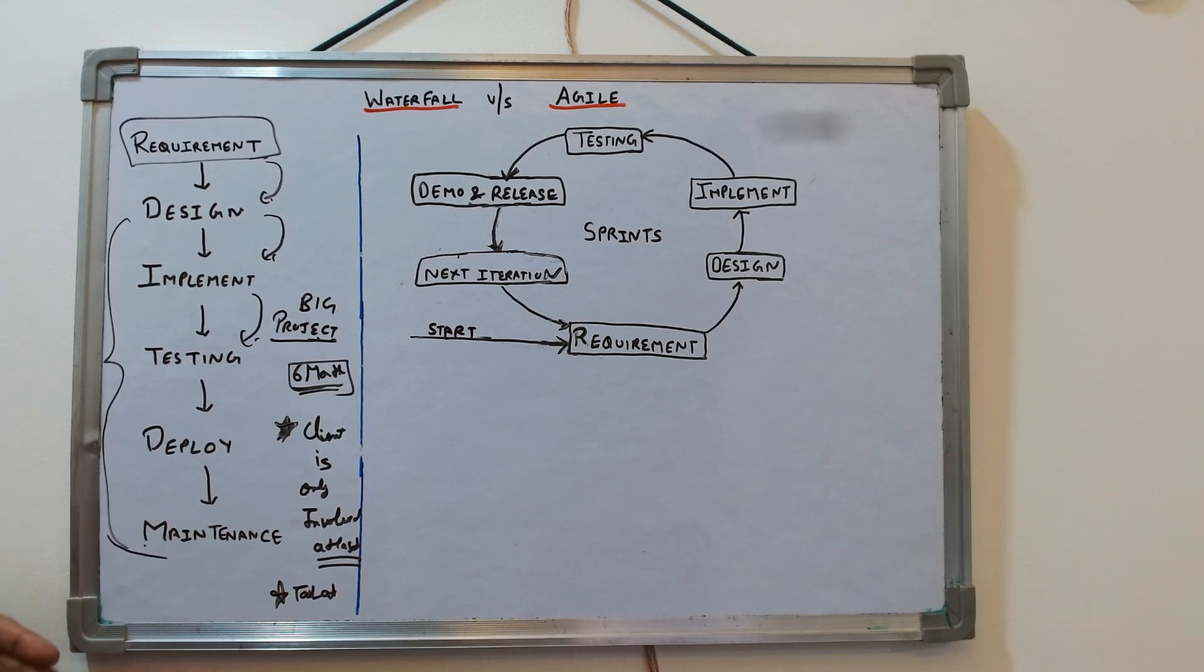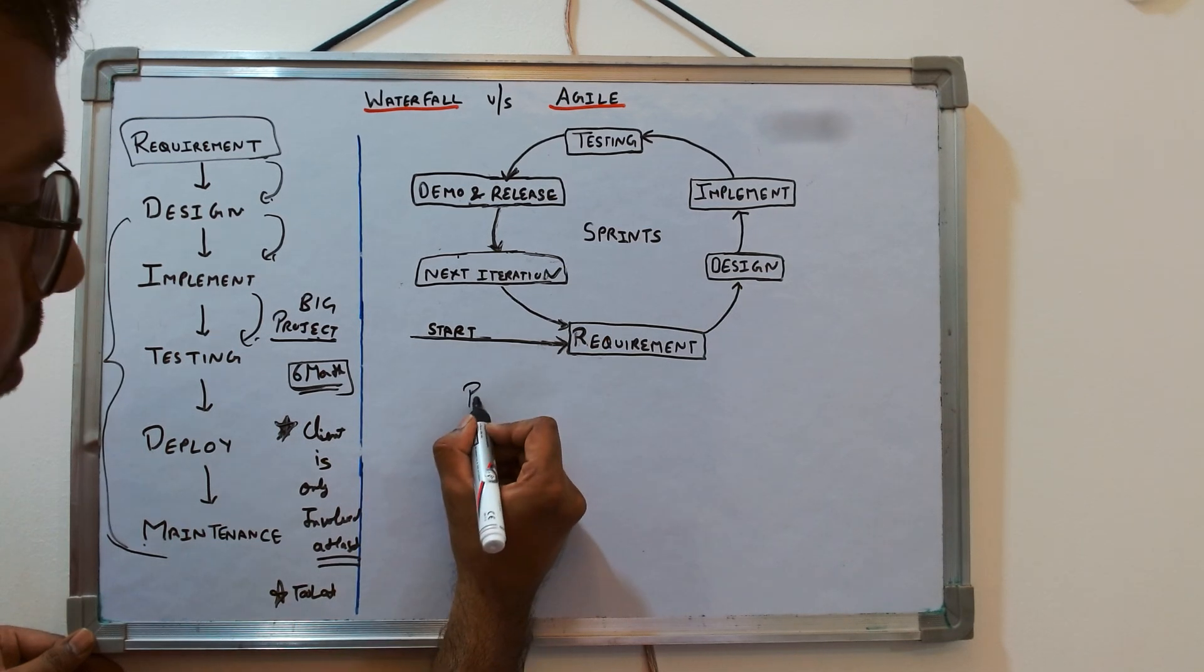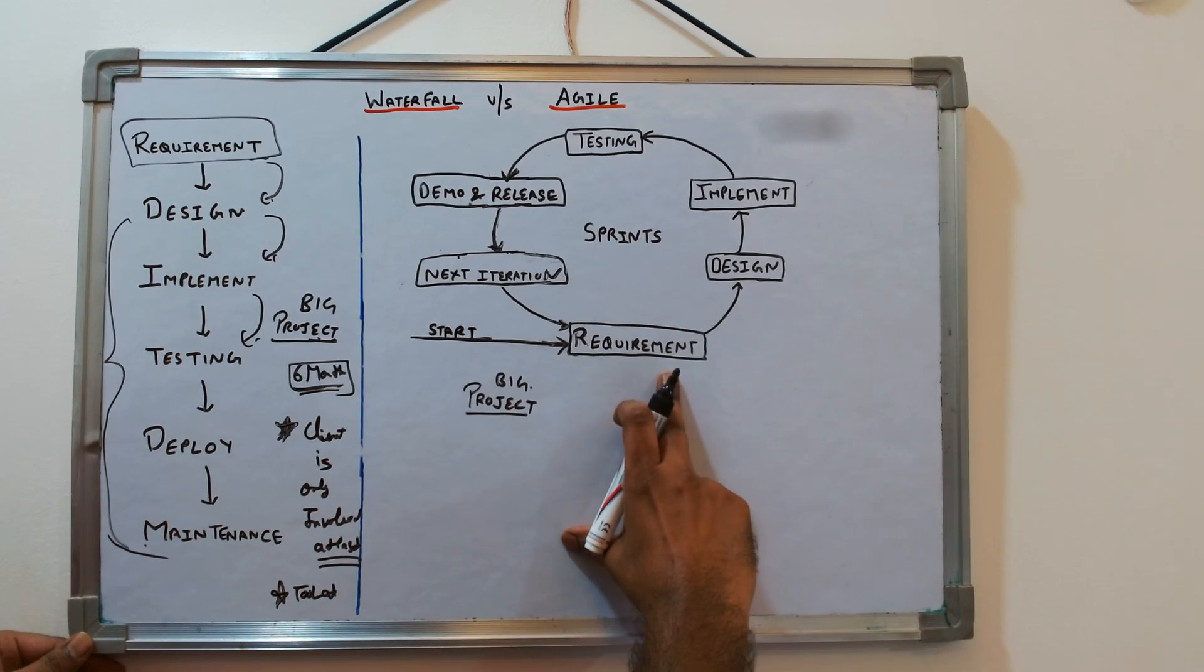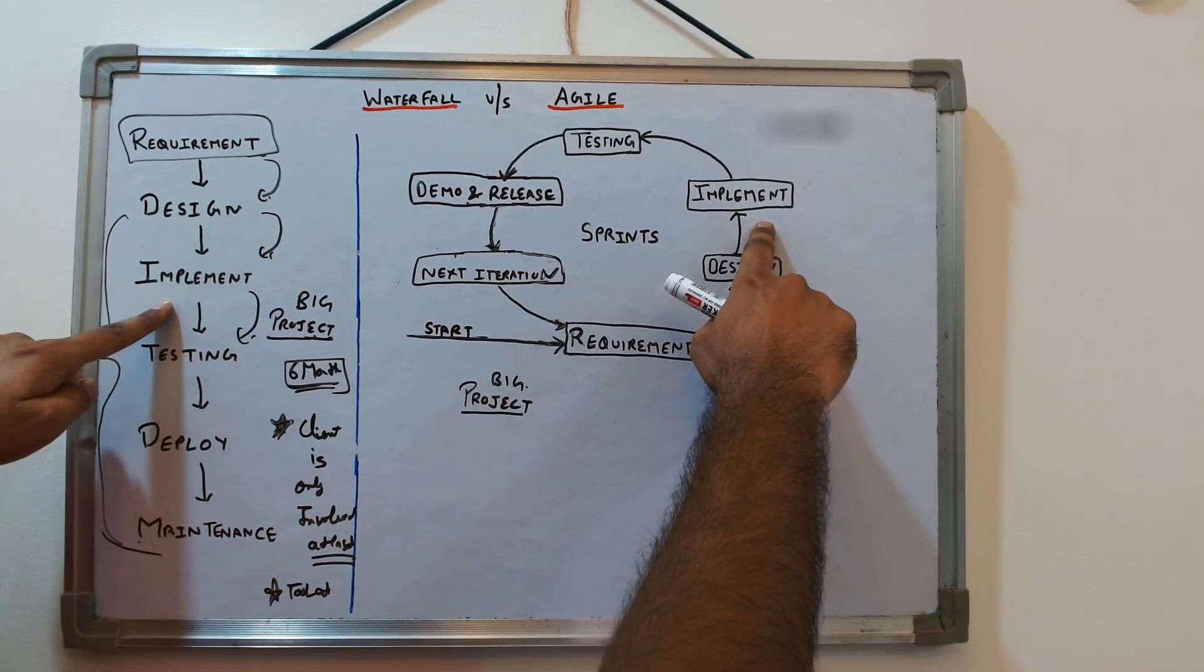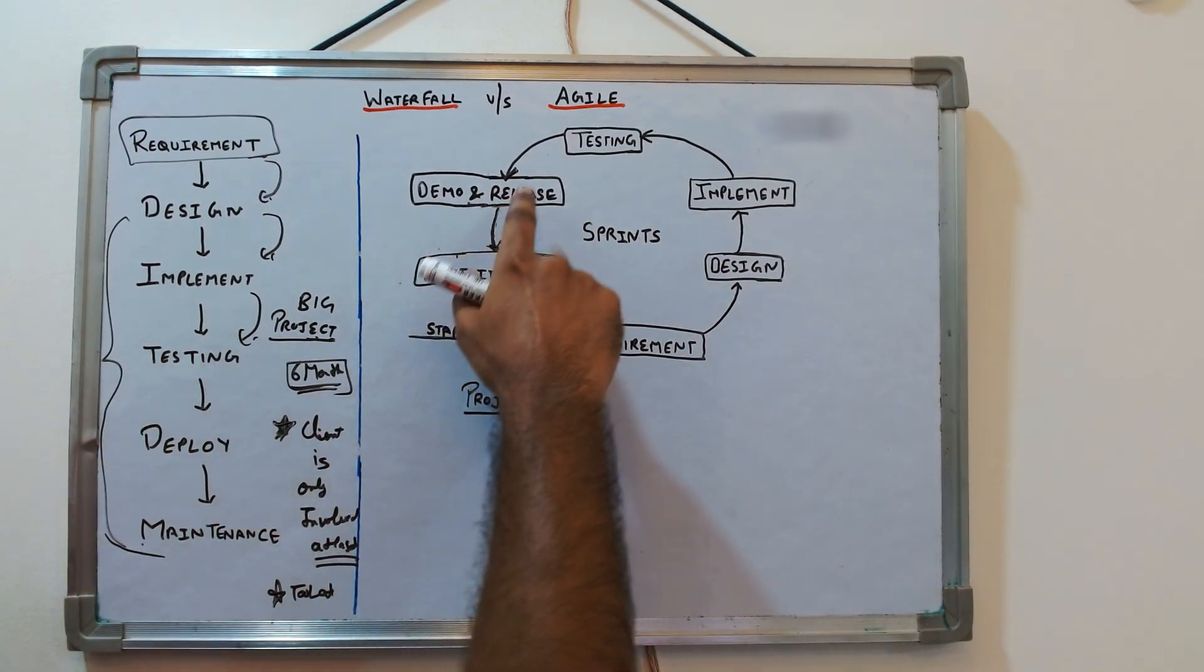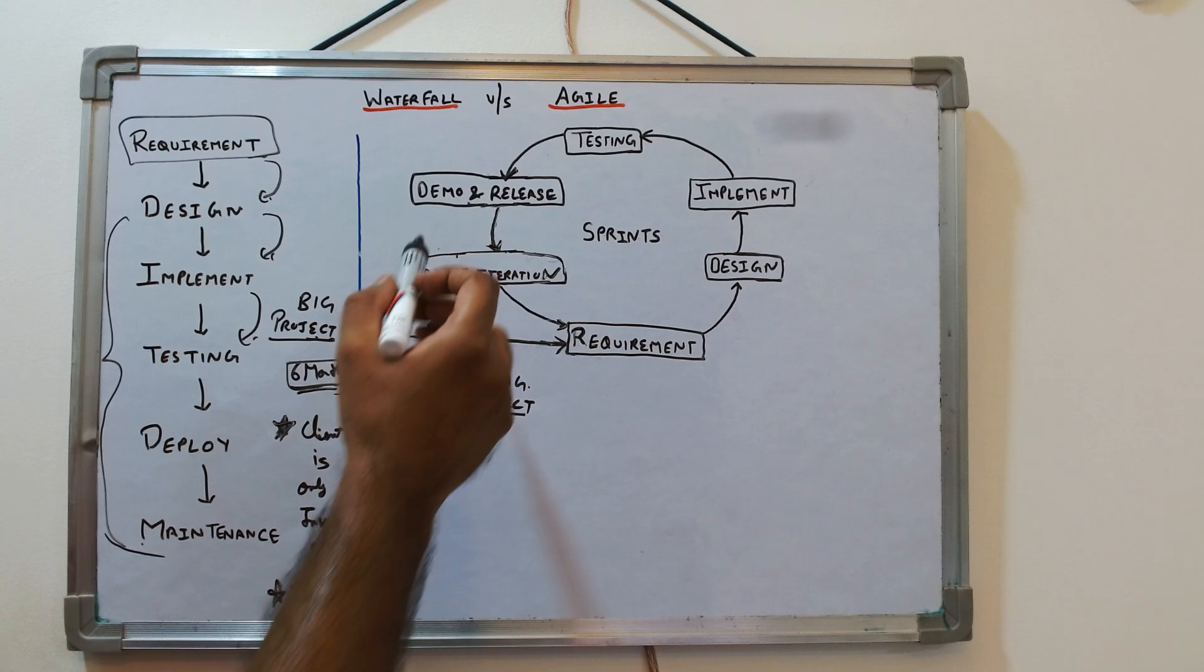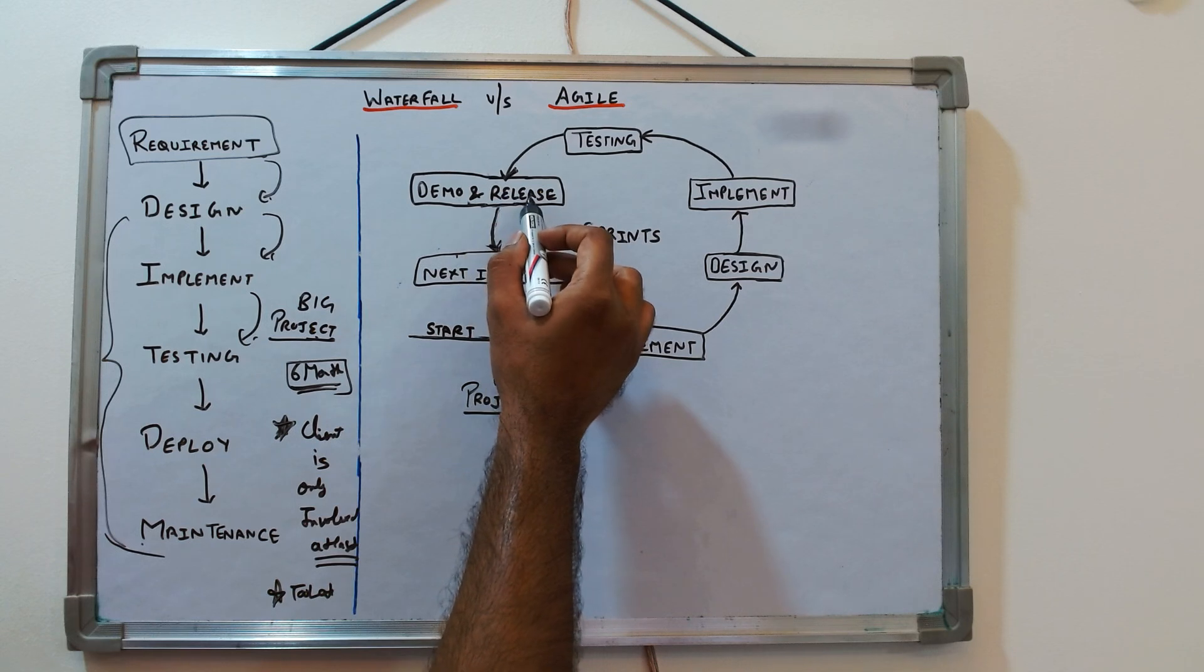Now here comes Agile. Let's say a big project comes. First, you do requirement gathering, then design, then implementation, then testing. After testing, I've added demo and release. You give the demo and then release it. The demo can be internal or with the client, whatever. You have a demo for whatever feature you're working on, release it, and then start working on the next iteration.